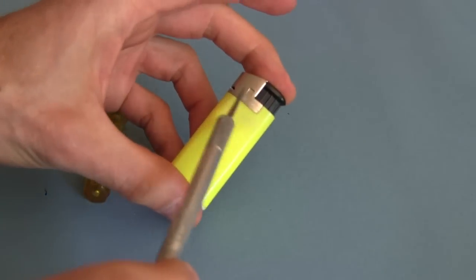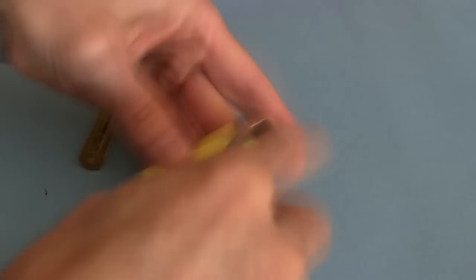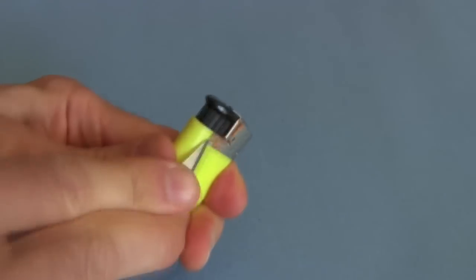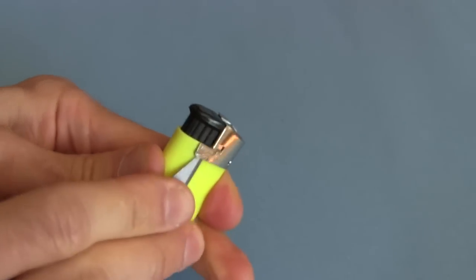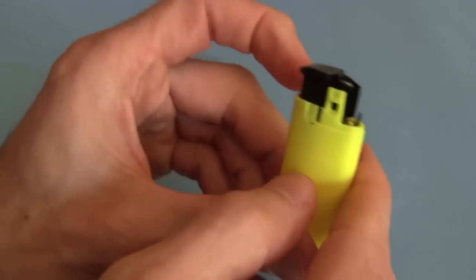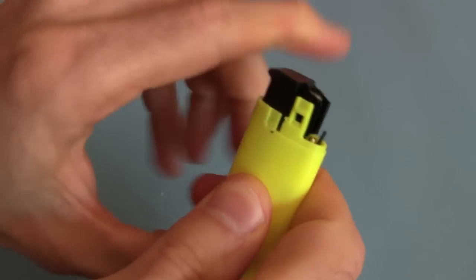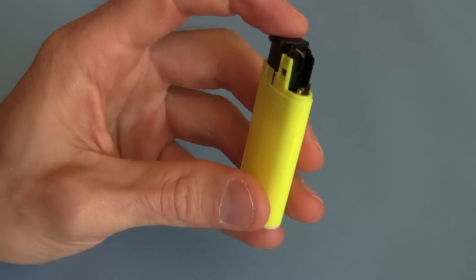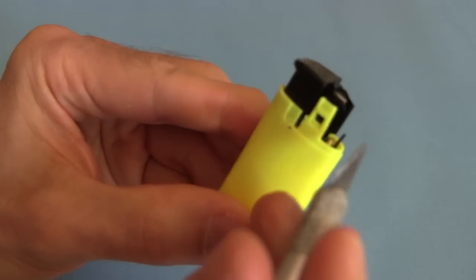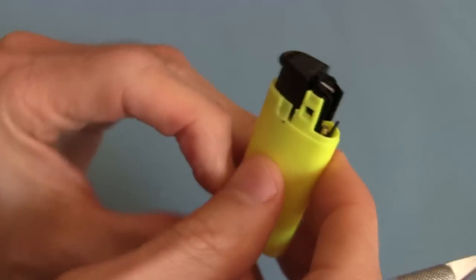First thing I want to do is take off this metal cap so you can see the spark inside. There we go. Let's see if I can show you this. Do that and we get the flame. But watch very closely right around this area right here. That's where you should see the spark.